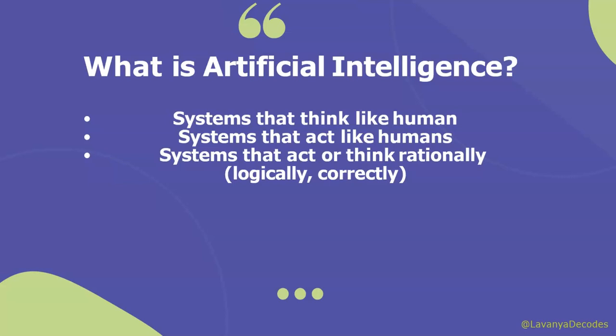Now, what is artificial intelligence? Basically it is a system that thinks like human, that acts like human, or a system that acts or thinks rationally — means logically, a system which is correct, or we can say that acts in a sensible manner. Artificial intelligence is basically a combination of two keywords: artificial, that is man-made, and intelligence, which means power of thinking.